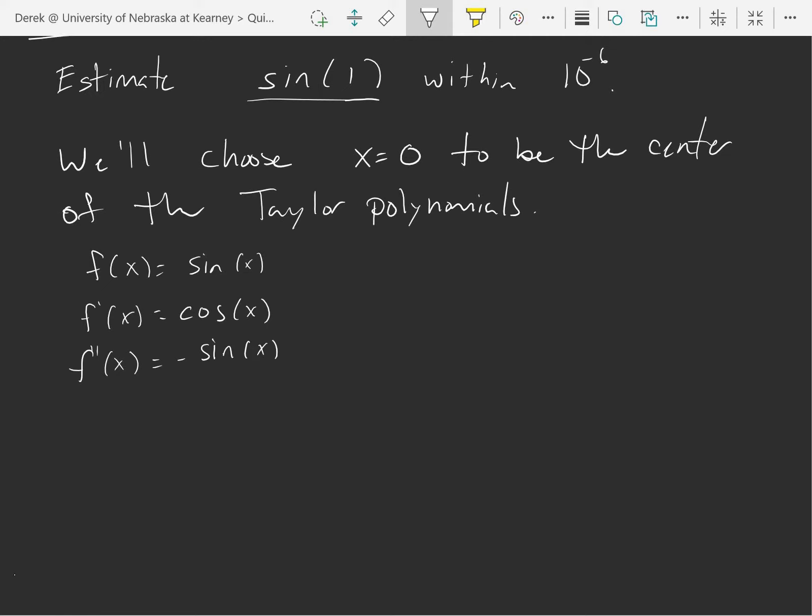And the third derivative would be the negative cosine of x, and then this is equal to the fourth derivative at x again, and this is the fifth and this is the sixth, and we get this pattern that these four things repeat indefinitely.